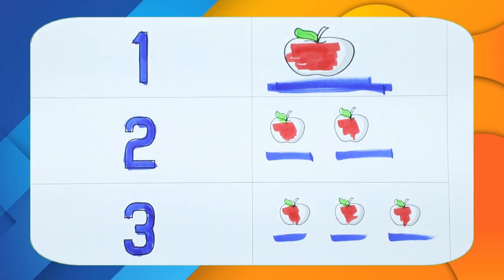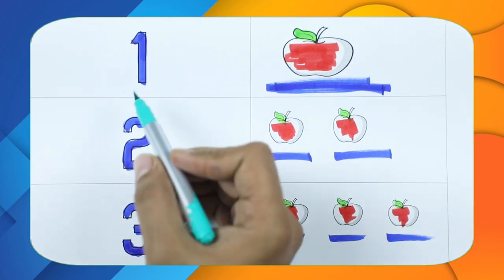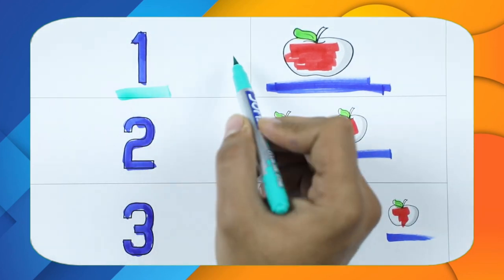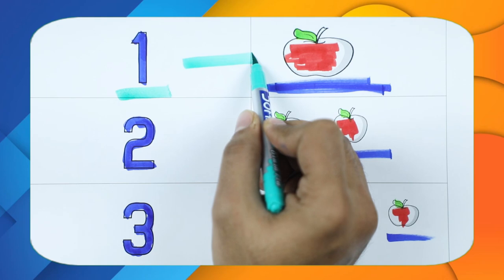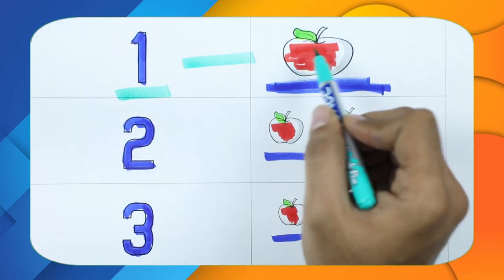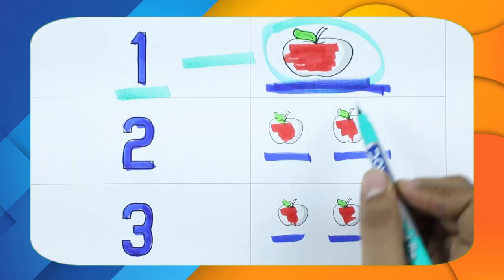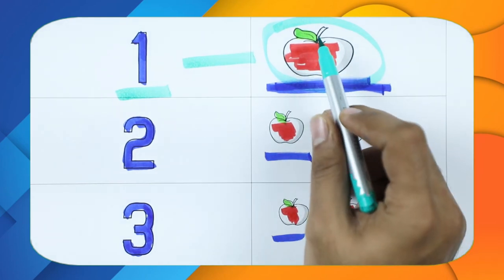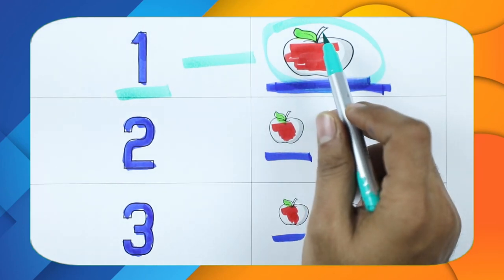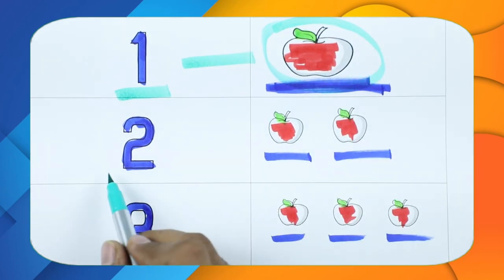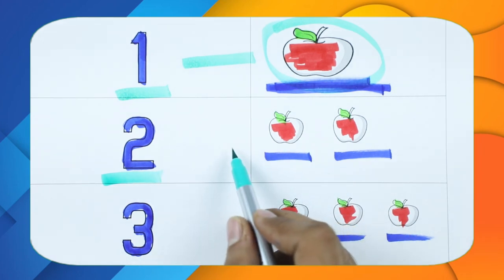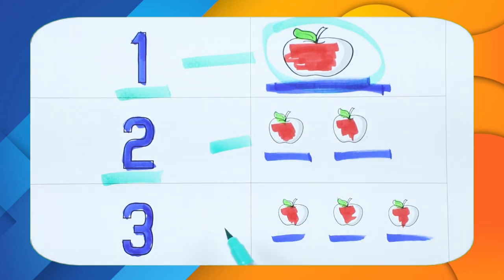Hello friends, today we learn numbers one, two, three with some apples. It's number one — so how many apples here? It's one apple! Yes, it's one apple, with red color and green color leaf. Two — here is one or two?